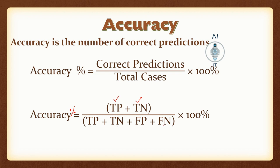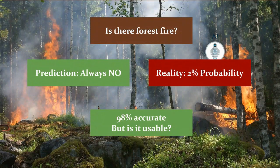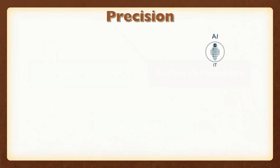Higher accuracy does not mean that we have good performance on predicting a specific label. We usually use the confusion matrix for problems related to classification. For example, if the model always predicts there is no fire but in reality there is a 2% chance of forest fire, even though there is 98% accuracy, it is still not useful for cases where fire has actually broken out. Hence, we need to look into another parameter — that is precision.